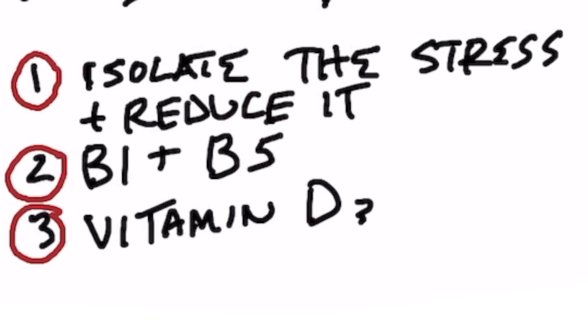So what can you do to counter some of this? Of course, you want to isolate the source of your stress and do whatever you can to reduce it. Number two, vitamin B1 and vitamin B5 are essential — you can get those from nutritional yeast — and they'll greatly help counter the effects of cortisol. The third thing is vitamin D3, which can also help you naturally reduce cortisol. There are many other things you can do for stress, but these are probably three of the top most important things to focus on.